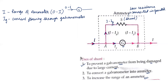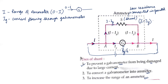Since the galvanometer and shunt are in parallel, the voltage across them is the same. So i_g × G = (I − i_g) × S. From this, to find S — the shunt value needed — rearranging gives S = i_g × G / (I − i_g). This is the formula for the shunt resistance to be placed across the galvanometer.